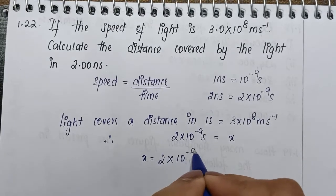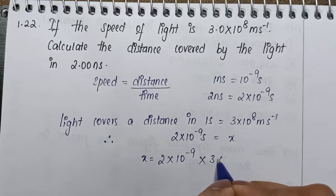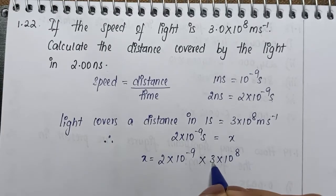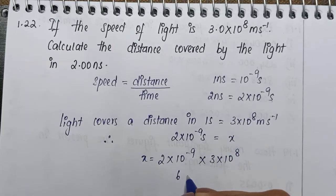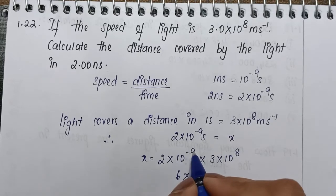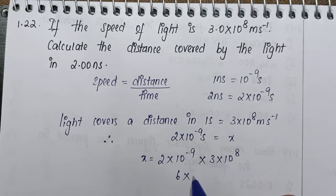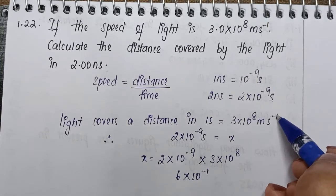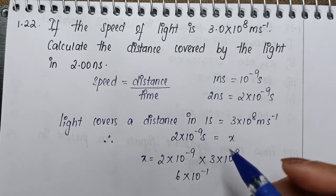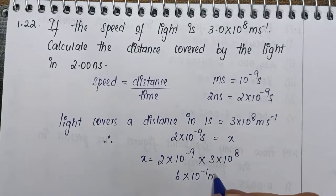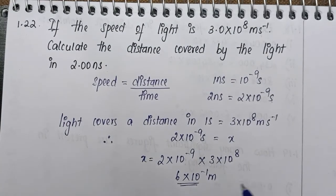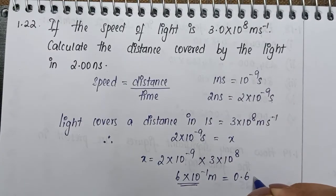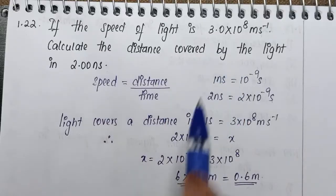So 2 into 10 to the power minus 9, into 3 into 10 to the power 8: 3 into 2 will be 6, into 10 to the power minus 9 and 10 to the power 8 gives 10 to the power minus 1. Meter per second and seconds cancel, leaving only meters. The final answer is 6 into 10 to the power minus 1, which can also be written as 0.6 meters.